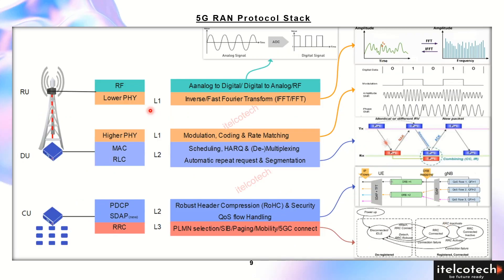Let's understand these protocols in a little more detail. The radio unit takes care of analog-to-digital and digital-to-analog conversion. Data coming from the antenna as electrical signals is converted from analog to digital by the radio unit, and data going from the distributed unit toward the antenna is converted from digital to analog by the radio unit. Time-to-frequency and frequency-to-time domain conversion of a signal is also done by the radio unit.